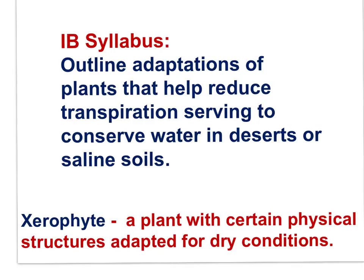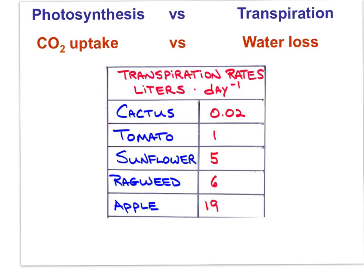The last IB syllabus statement of this movie relates to the essential idea that plants adapt their growth to environmental conditions. The syllabus statement is: Outline adaptations of plants that help reduce transpiration, serving to conserve water in deserts or saline soils. A xerophyte is a plant with certain physical structures adapted for dry conditions. In order to be successful in very dry environments, plants must conserve water. Limiting water loss might limit photosynthesis. Photosynthesis requires carbon dioxide, so stomata must be open — but when stomata are open, transpiration results in water loss. Terrestrial plants must balance carbon dioxide uptake with water loss.